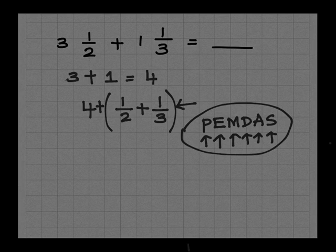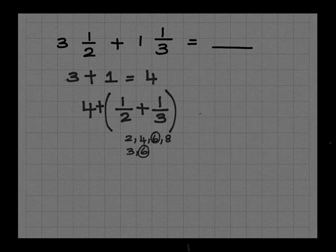To solve the fraction inside the parenthesis, let me make like units. Okay, so 2, 4, 6, and 8 are the multiples of 2. And 3, 6, 9 are the multiples of 3. So 6 is the least common multiple. Okay, so let me solve the problem.